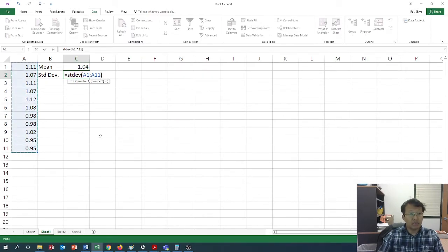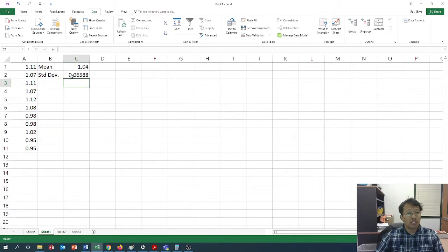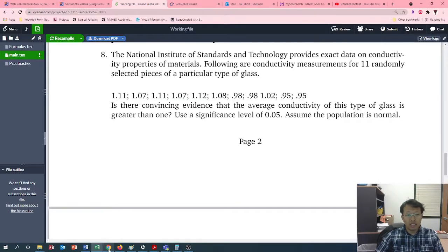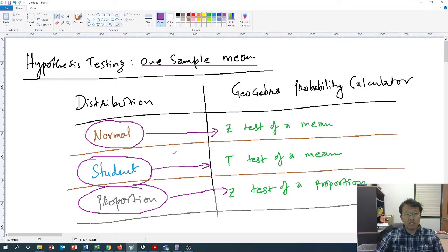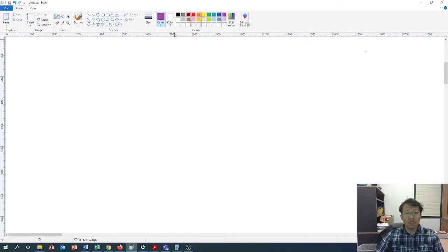And it is saying, is there convincing evidence that the average conductivity of this type of glass is greater than one? Use a significance level of 0.05. So let's assume the population is normal. First of all, let us state the null and alternative hypothesis for this one.